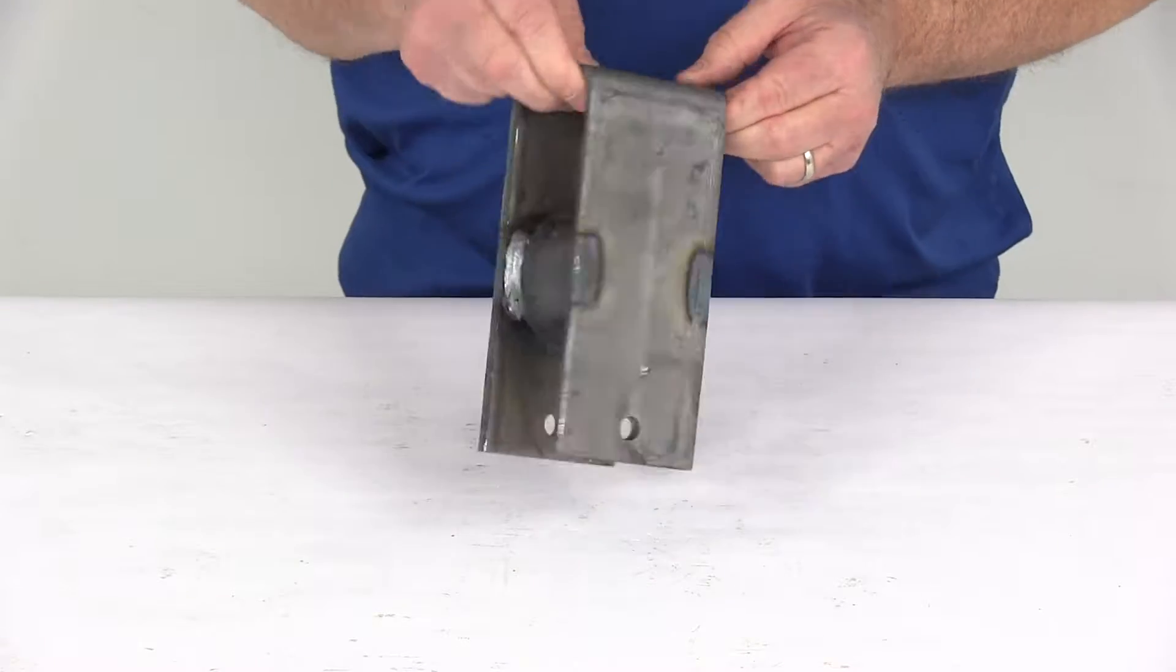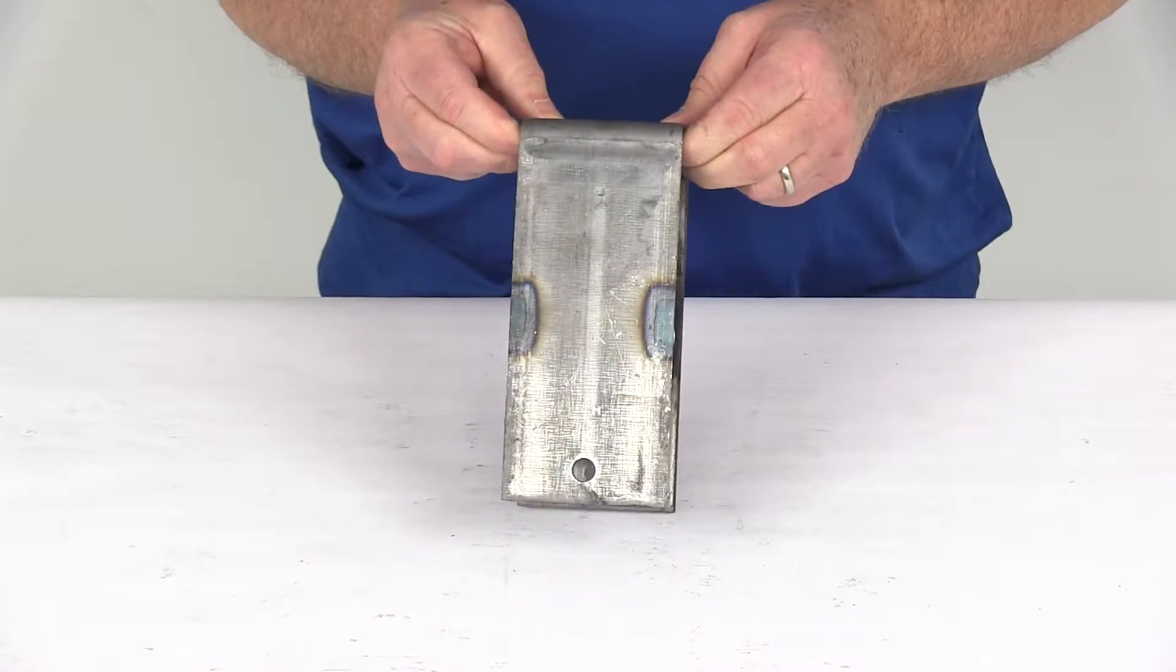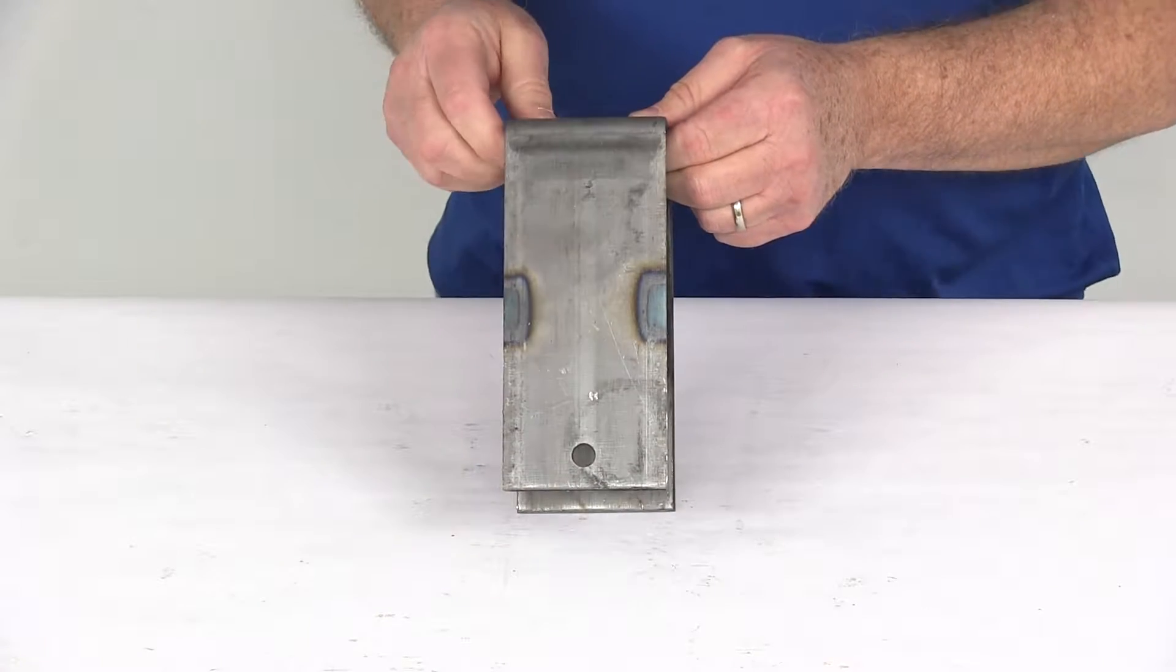Today we're going to take a look at the rear hanger for 2 inch wide slipper springs. This is 6 and 3 eighths inches tall, has a 5 sixteenths diameter bolt hole.